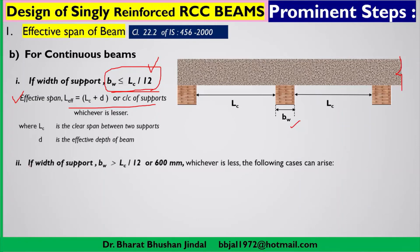The second condition is: if the width of the wall or support is greater than LC/12 or 600 mm, whichever is less. First, calculate LC/12 — say it comes to 500 mm — then compare with 600 mm. Out of 500 mm and 600 mm, whichever is less (here 500 mm) is taken into consideration, and the following sub-cases arise.